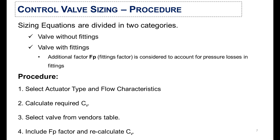Here comes the procedure of control valve sizing. Sizing equations are divided into two categories: valve without fittings and valve with fittings. If there are fittings across the valve, an additional factor called the fittings factor is considered to account for pressure losses. The main procedure steps are: first, select the actuator type and flow characteristics; second, calculate the required Cv (valve coefficient); third, select the valve from the vendor's tables based on the calculated Cv; and fourth, include the Fp factor (fittings factor) and recalculate the Cv.